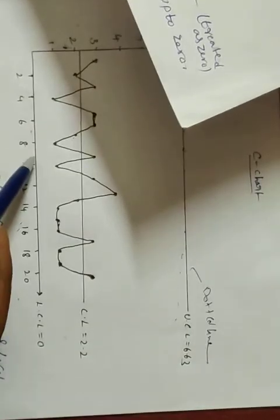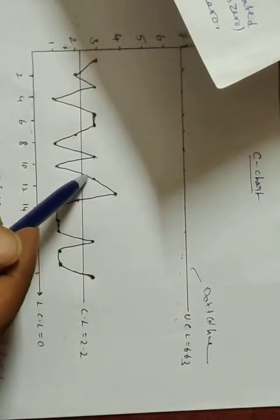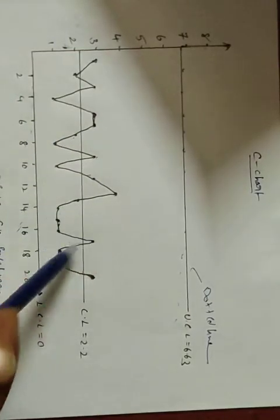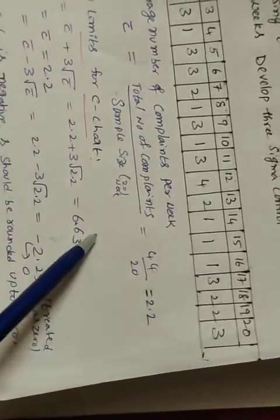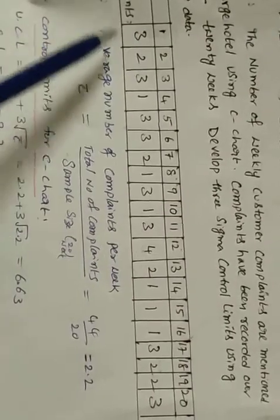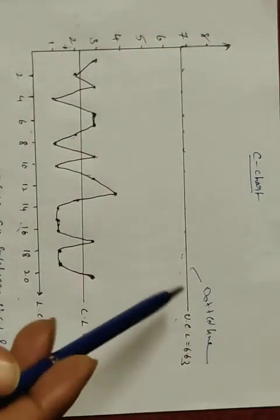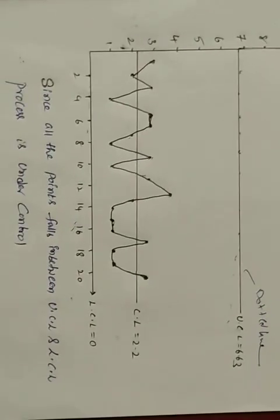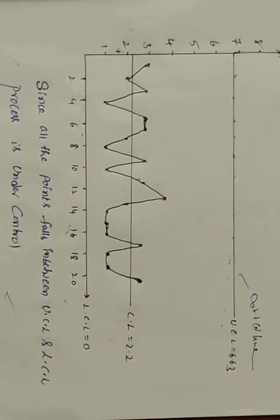Week 7 is 2, week 8 is 1, week 9 is 3, week 10 is 1, week 11 is 3 — and so on up to week 20. All values are plotted. The graph shows UCL and LCL. Since all the points fall between UCL (6.6) and LCL (0), the process is under control. This is how we draw a C chart.